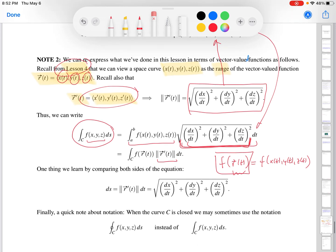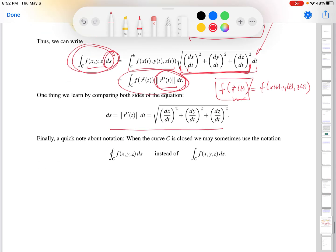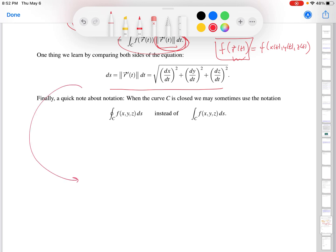Okay, so long story short, by comparing this side and this side of the equation, we notice that ds is equal to norm of r prime of t dt. That's what I wrote down over here.